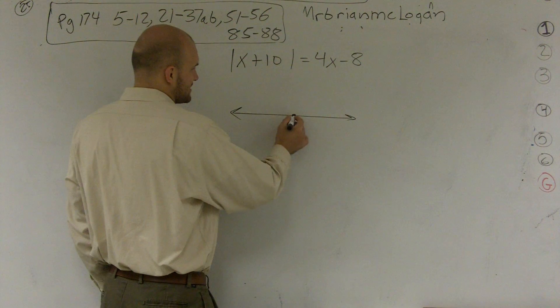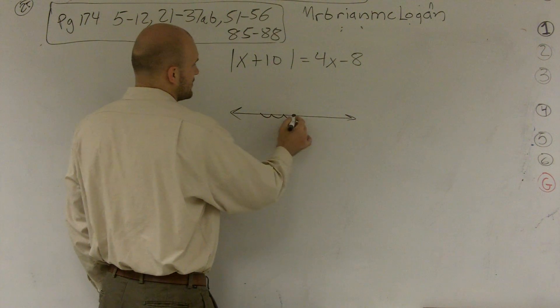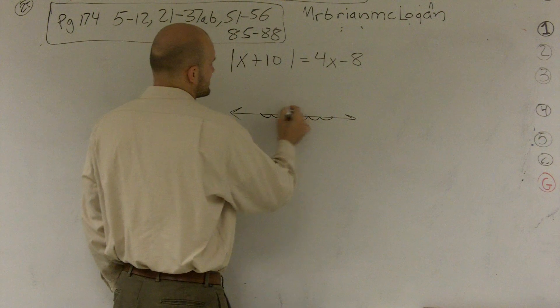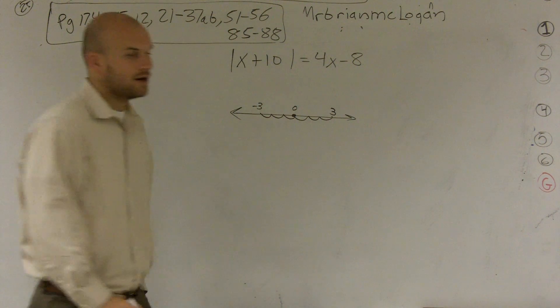And what we can look at in our number line, let's say we have 1, 2, 3, 1, 2, 3. Let's say this is 0, that's at negative 3, and that's at 3.